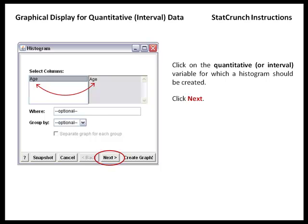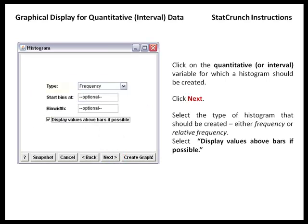If we click Next, we can now select whether we would like a frequency histogram or a relative frequency histogram to be created. We'd also like to place a check mark beside display values above bars if possible, and we'll discuss that option further in just a moment.